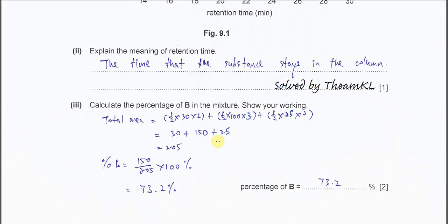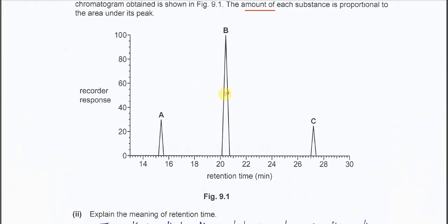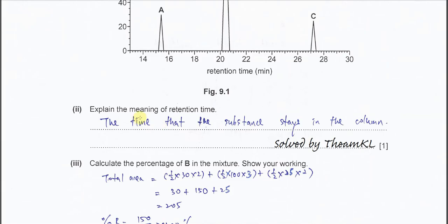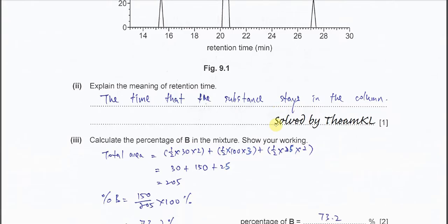Part 2: explain the meaning of retention time. Retention time is the time that the substance stays in the column — how long it stays before being eluted. A elutes faster than B and C. C is retained longer, meaning C has a better interaction with the column. A has the least interaction. Better interaction or greater attraction means the substance stays longer.